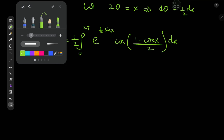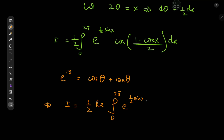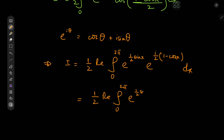We now invoke Euler's beautiful formula, whereby e to the iθ equals cosine θ plus i times sine θ. So i is actually one half the real part of the integral from 0 to 2π of e to the (one half sine x) times e to the i times (one half) times (1 minus cosine x) dx. Expanding the exponent, we get e to the (i/2) times e to the (negative i/2 cosine x), and since e to the i/2 is a constant, we take it outside the integral.